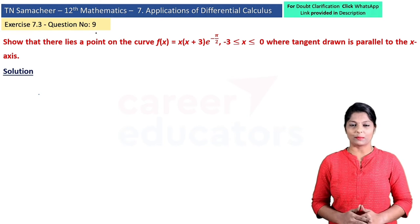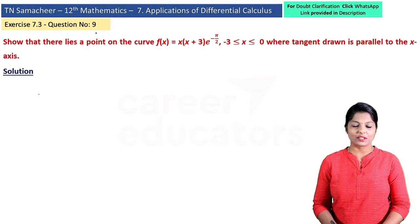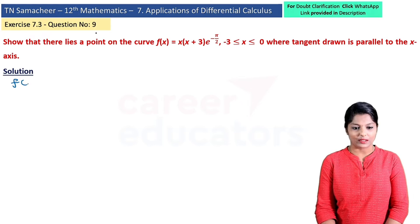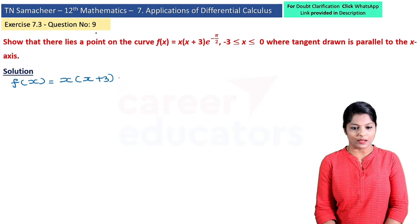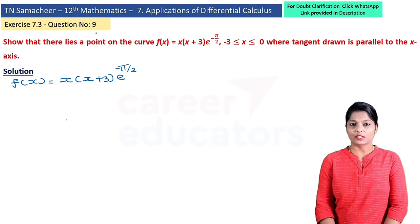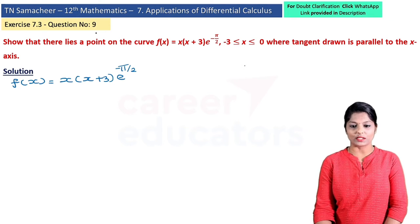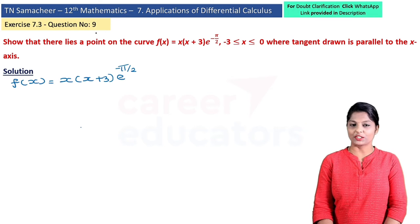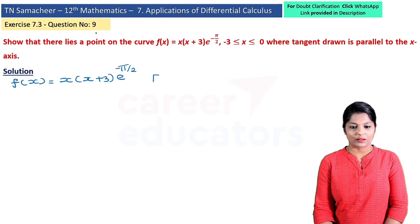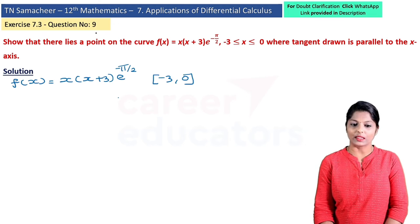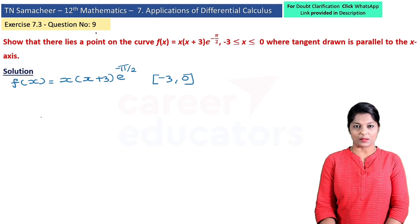To apply Rolle's Theorem, first we check that f(x) is continuous on the closed interval [−3, 0]. We take f(x) = x(x+3)·e^(−x/2) and verify continuity on [−3, 0].